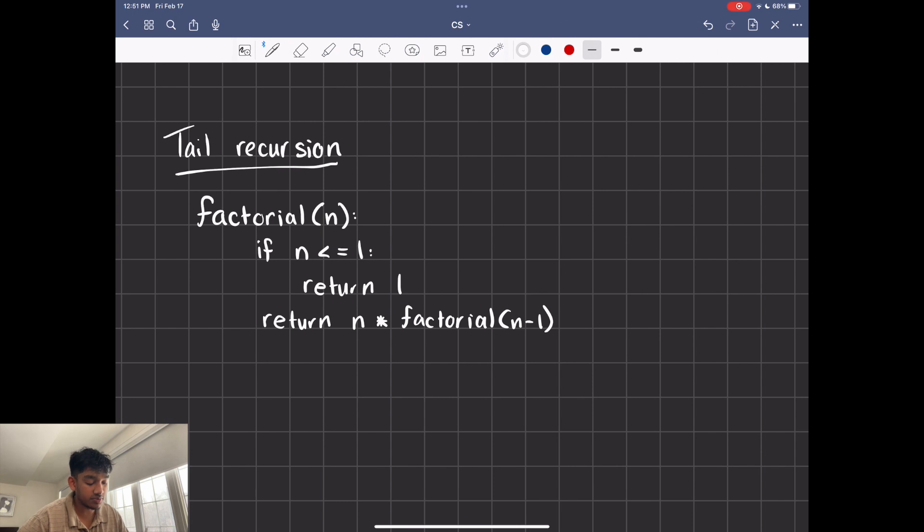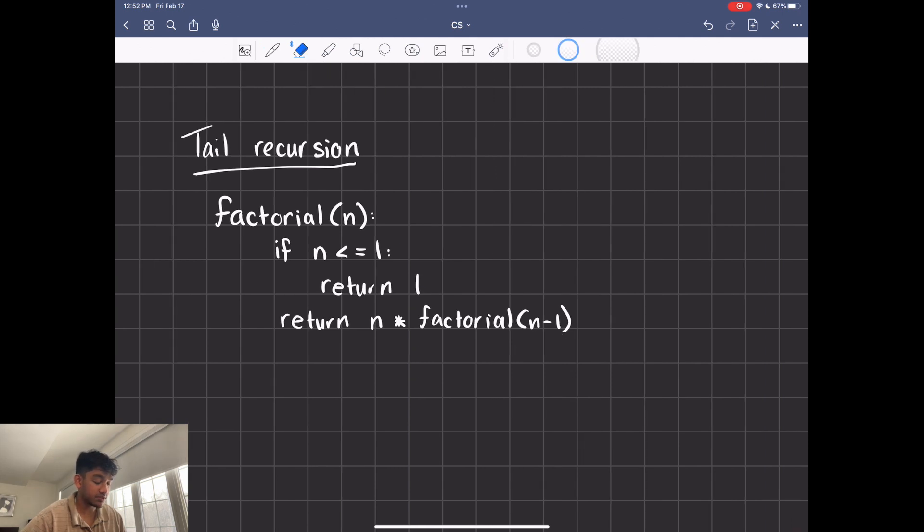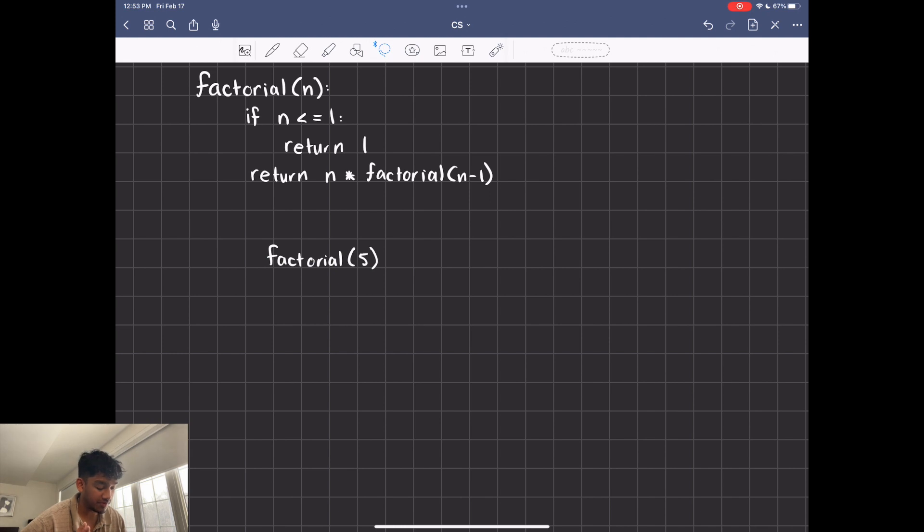Now let's use that factorial example we used in the code implementation. So we have our base case right here, we have our recursive call, and we have this third part where we work towards the base case because n is getting smaller and smaller. Now even though it's a valid function, it's not very optimal. Let's do a basic example of factorial 5.